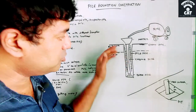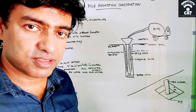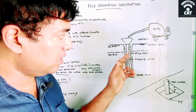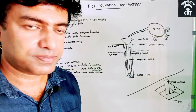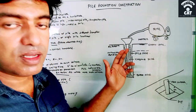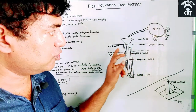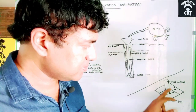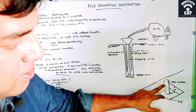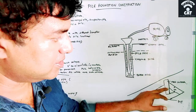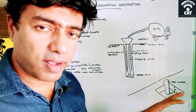We pour concrete up to one meter above the cutting edge. The reason is that as concrete is poured, groundwater mixed with bentonite rises and that mixture carries many impurities. The concrete in this one-meter zone above the cutting edge will contain those impurities. Once it is cast and cured, we will break and remove that one-meter section of concrete, expose the reinforcement, place PCC, and then construct the pile cap in that area.